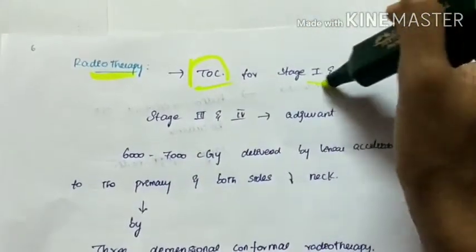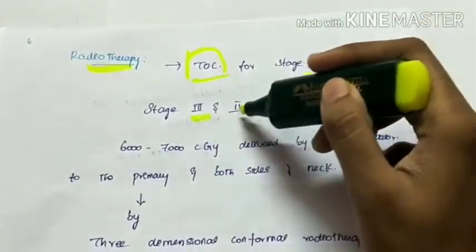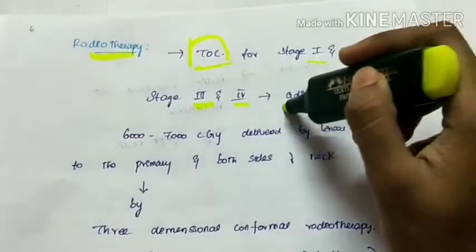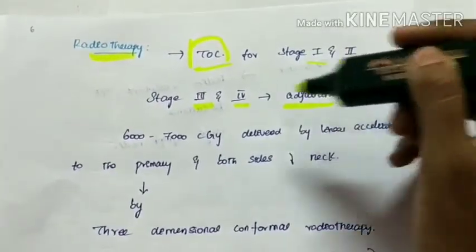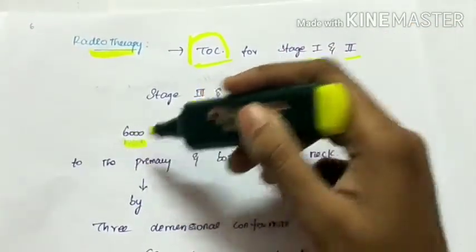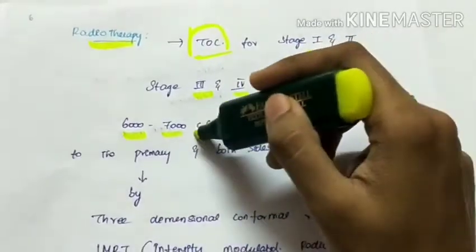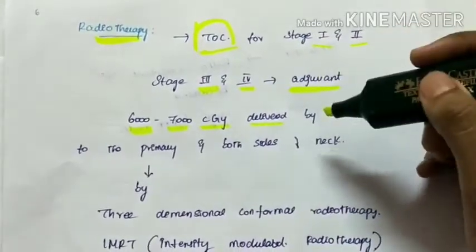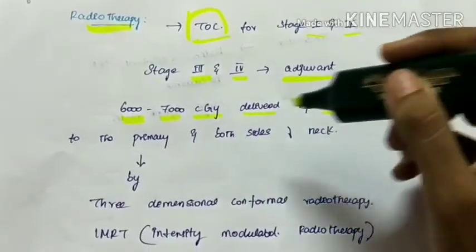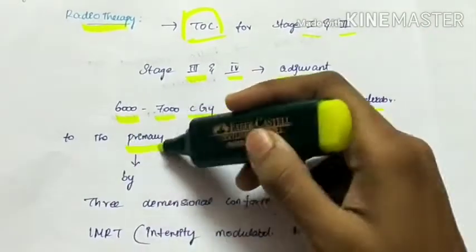Treatment of nasopharyngeal carcinoma: radiotherapy, chemotherapy, or surgery. Radiotherapy is the treatment of choice for stage 1 and stage 2, whereas for stage 3 and stage 4 we give adjuvant treatment. Radiotherapy is by using 6000 to 7000 units given by linear accelerator to both the primary and both sides of the neck.